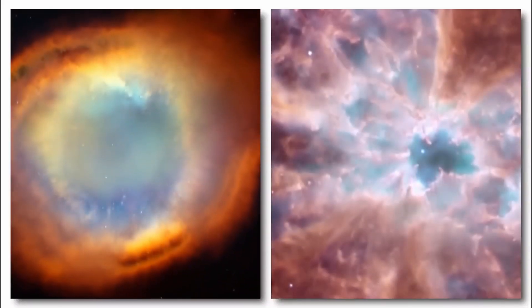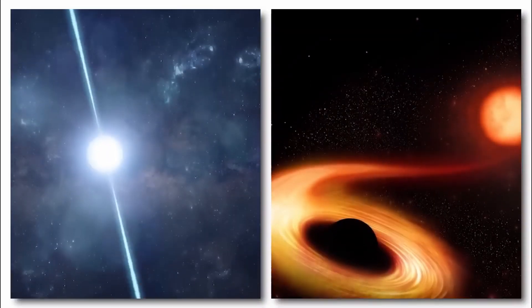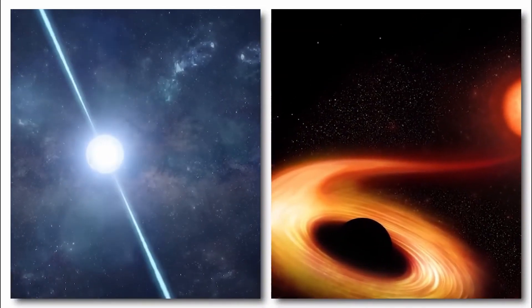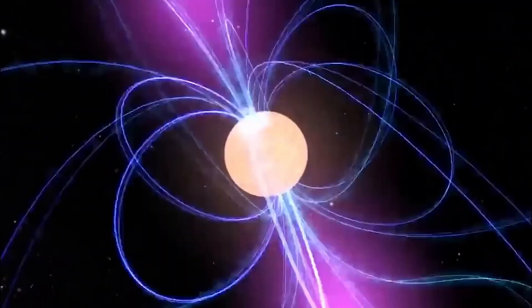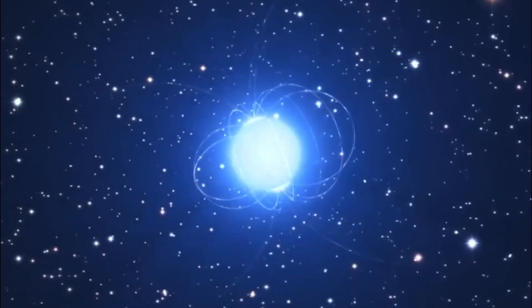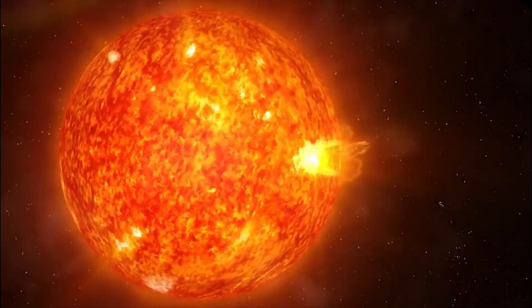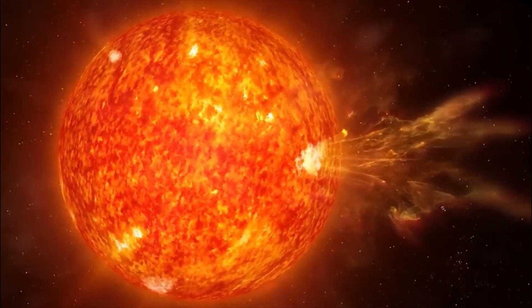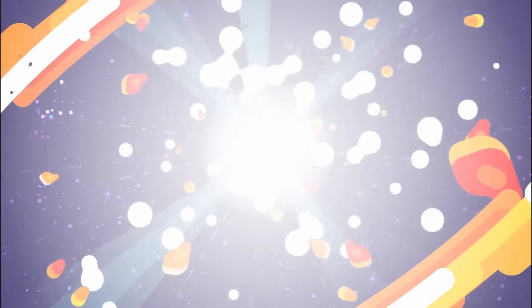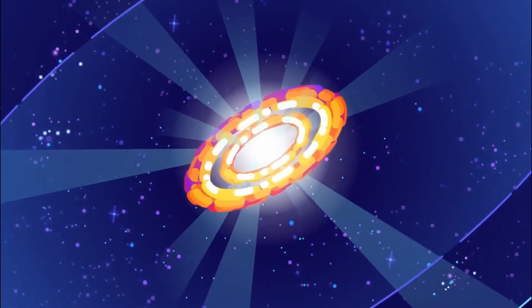Following a supernova, the collapse of a star's core will birth either a neutron star or a black hole. A neutron star is characterized by its staggering density contained within a space comparable to a modern-day city, lies a compact entity harboring 1.4 to 3 times the mass of our Sun. This compact mass primarily comprises densely nestled neutrons, mint constituents found within atomic nuclei.